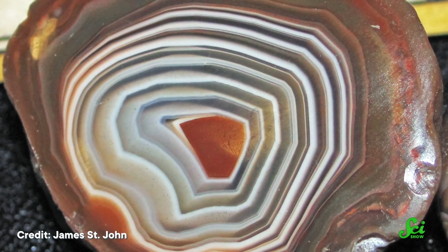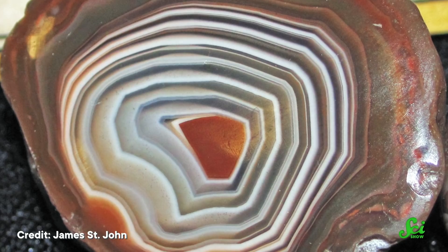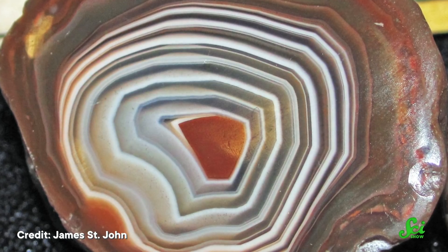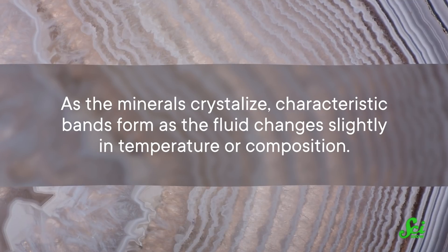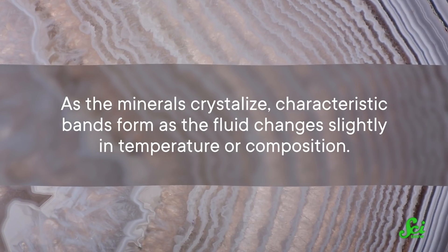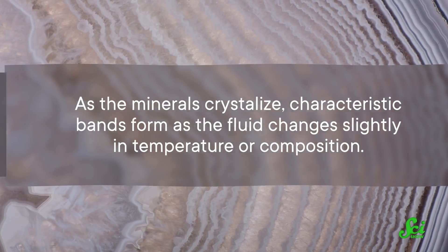Volcanic rocks are often rich in silica, and the leftover heat is perfect for making the hot, silica-rich fluid needed. As the fluid flows through the gaps in the rock, the crystals slowly form from the outside in, layer by layer — kind of like tree rings, if they form from the opposite direction. As the minerals crystallize, characteristic bands form as the fluid changes slightly in temperature or composition.